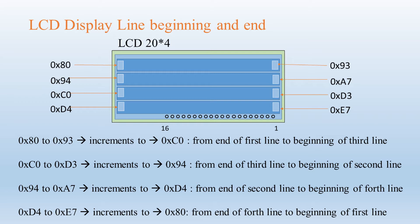The first position in the first line of the LCD starts from 0x80 hex. For a 20x4 LCD the first position is 0x80 and the end position is 0x93 for the first line. The cursor increments to the next position to the right. From the end of the first line the cursor moves to the first position of the third line, and from the end of the third line to the first position of the second line. After the second line ends, the cursor moves to the fourth line, and after the fourth line it wraps back to the first line.